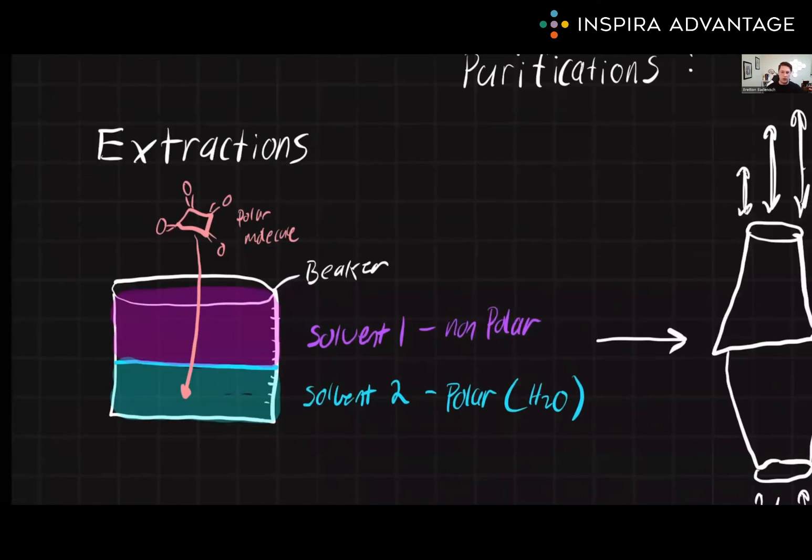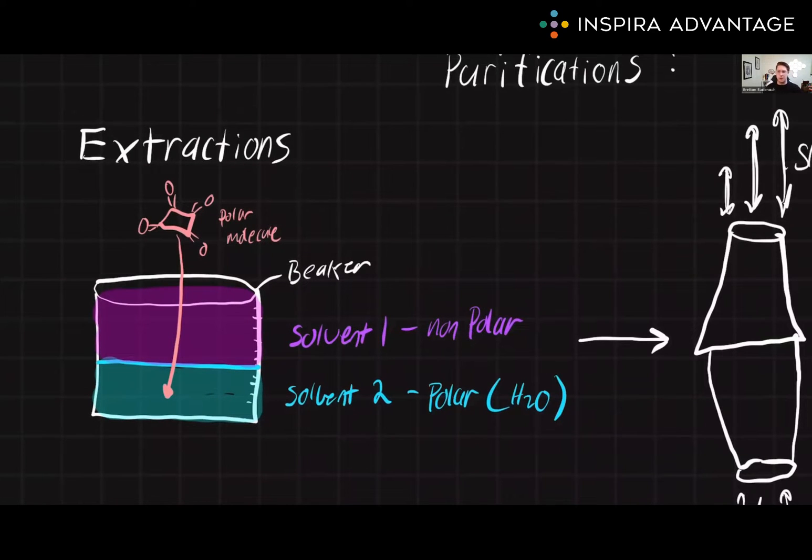Let's start off with extractions. Extraction is a common technique used to separate a specific compound from a mixture. It involves two immiscible solvents. Immiscible means they're not mixing together, so we have two layers, like oil on top of water. So we have here, our nonpolar layer is on top of our polar solvent.